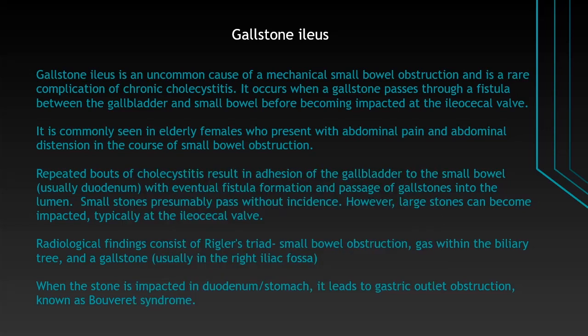It is commonly seen in elderly females who present with abdominal pain and distension in the course of small bowel obstruction. Repeated bouts of cholecystitis result in adhesion of the gallbladder to the small bowel, which is usually the duodenum, with eventual fistula formation and passage of gallstones into the lumen.